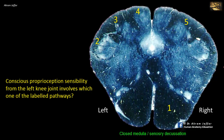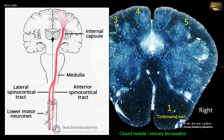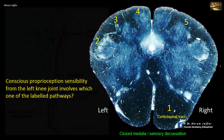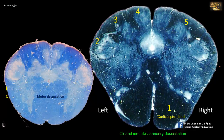First, let's identify the tracts. One is the anteriorly located pyramid containing corticospinal fibers. The axons of these fibers originate from neurons in the cortex, as the name indicates, and they decussate at a lower level than this one — at the level of motor decussation.